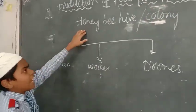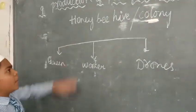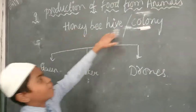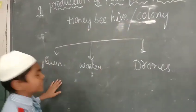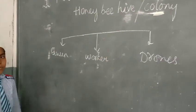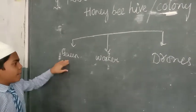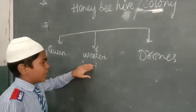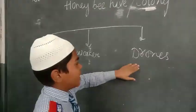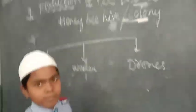We are here to explain about honey bee house colonies. There are three types of bees. First, queen bee. Second, drone bee. And worker bee.